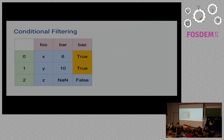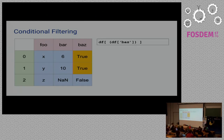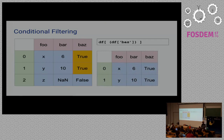Just mention whichever rows we want and it will fetch the 0th and 1st row like this. But what if you have some conditions — like if you want to fetch some data based on the value in some column — then you can just do this. In the square bracket, just mention the condition that you have.